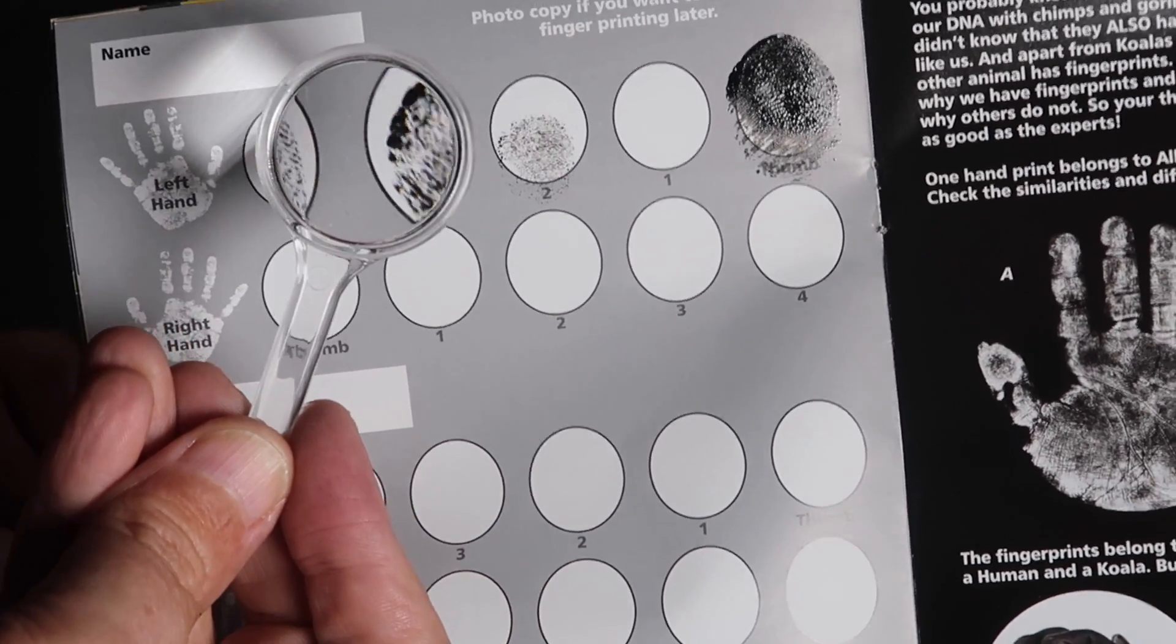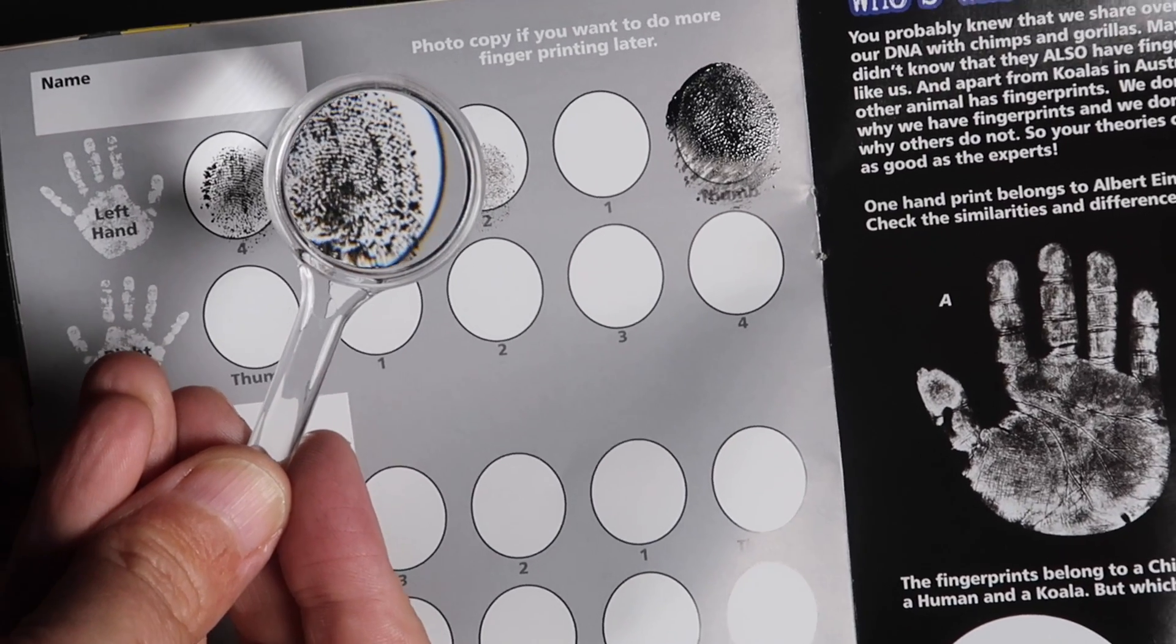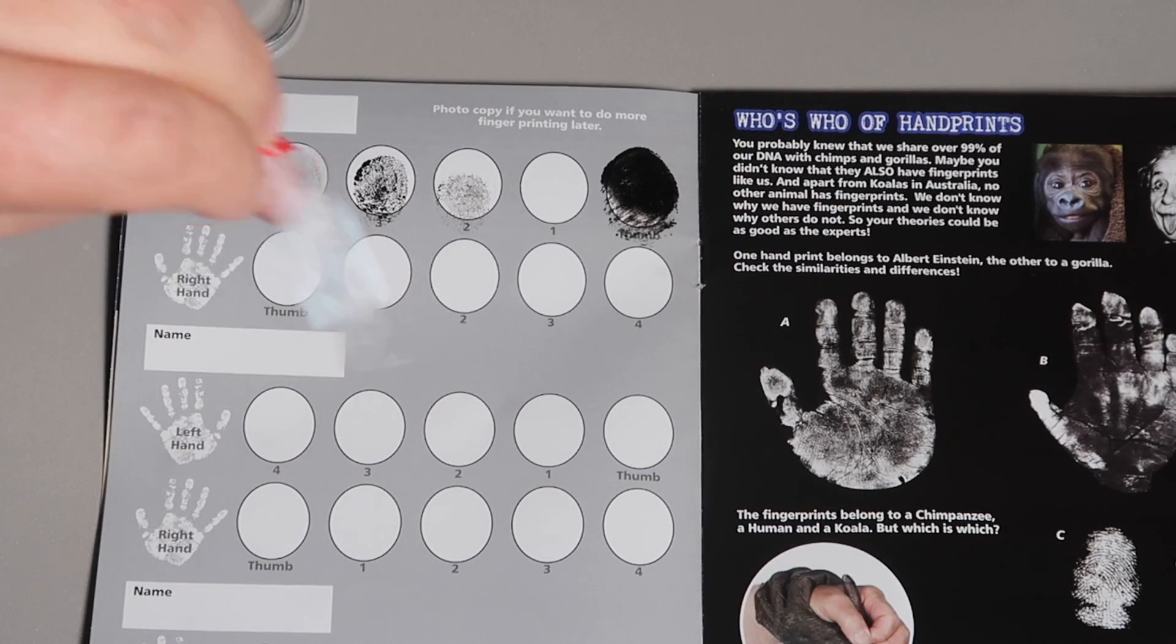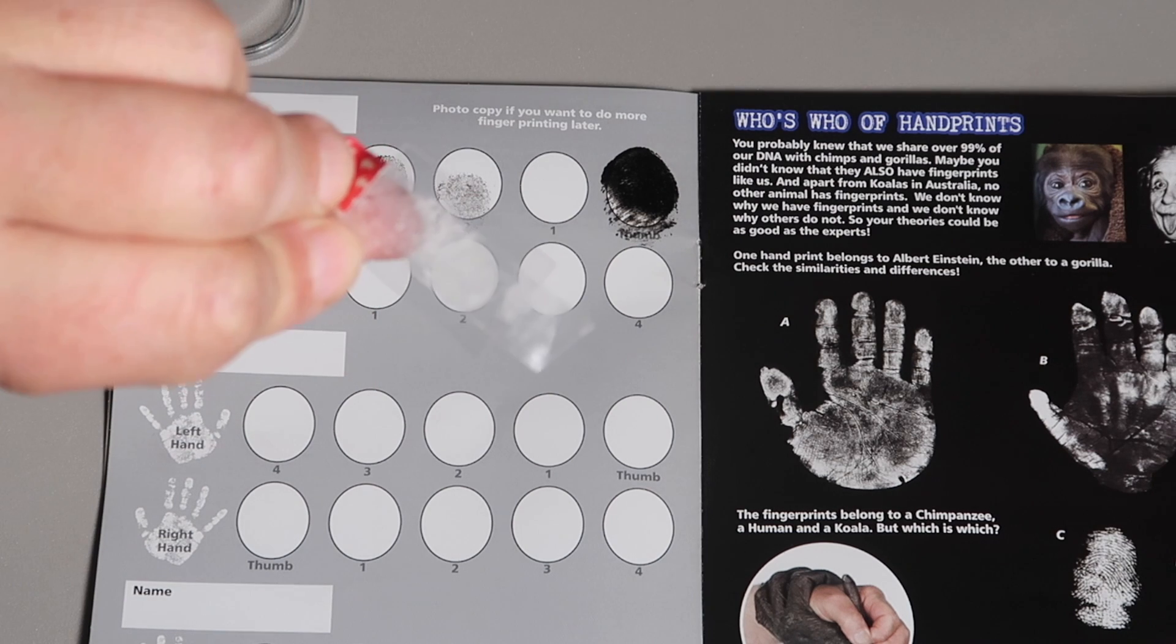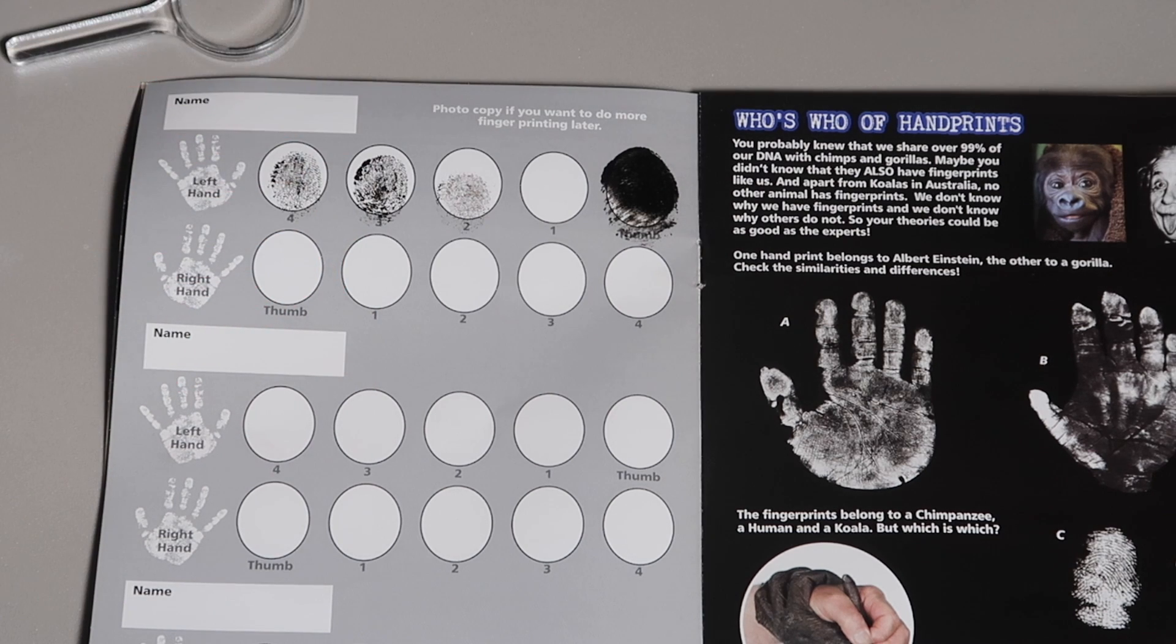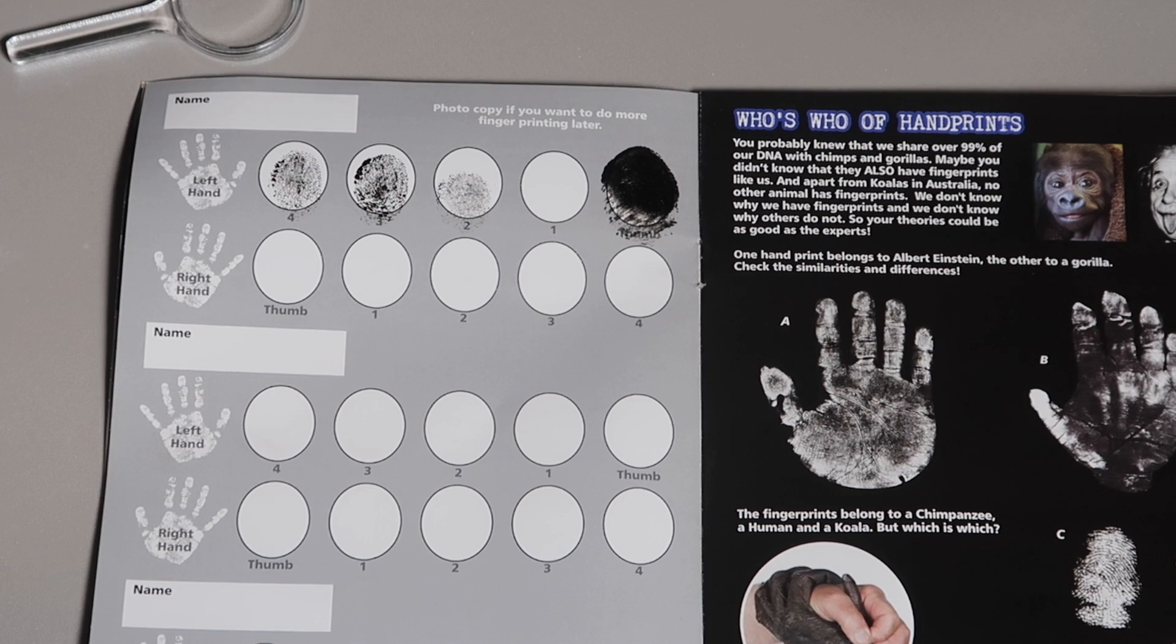And then you would analyze this fingerprint and compare the ridges against the ones that are on the tape of the fingerprints you lifted off the crime scene. And theoretically, you should be able to identify the criminal.